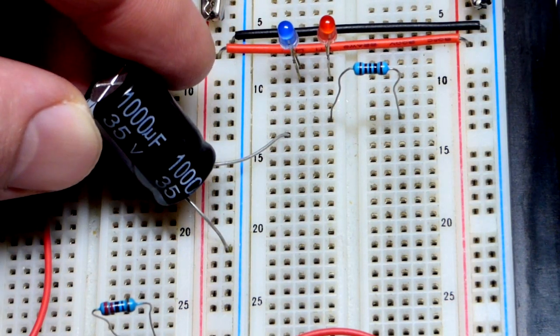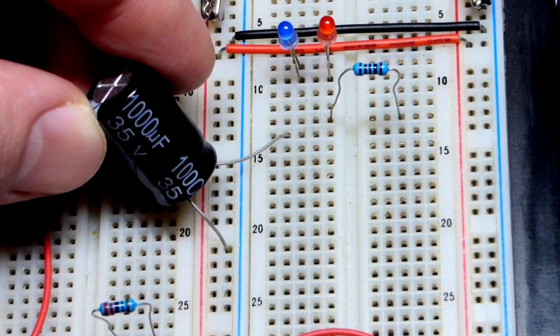In this video we're going to look at how capacitors pass alternating current but block direct current.